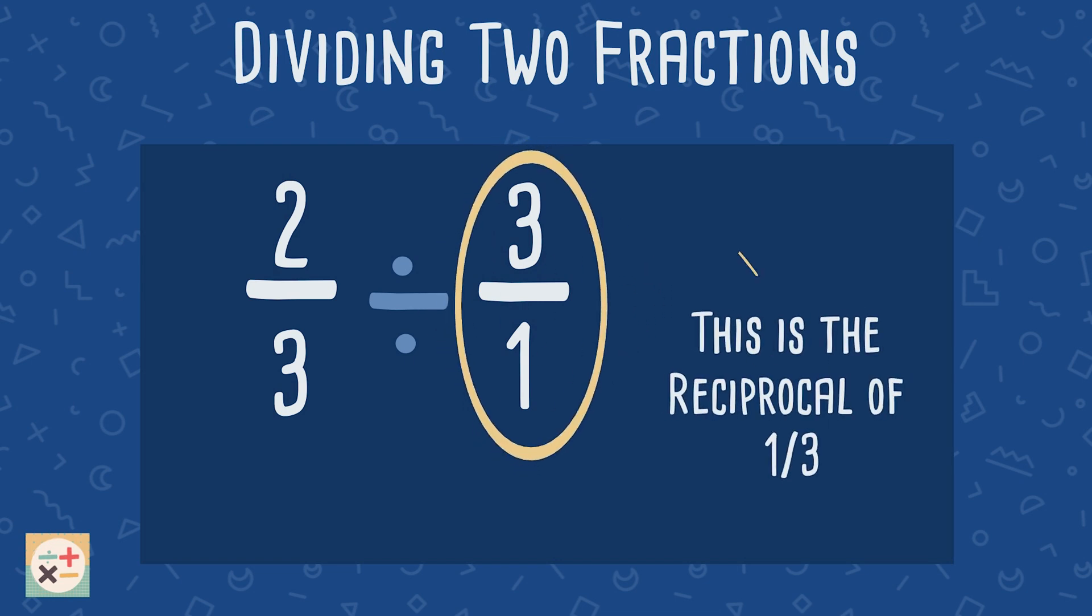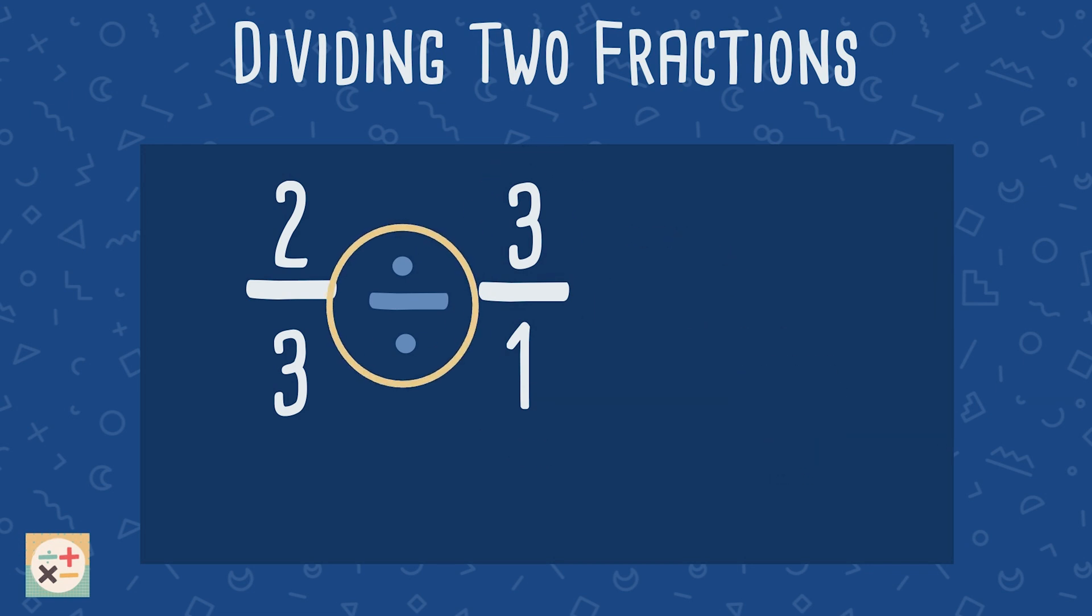This is called the reciprocal of the original fraction. Then change the division to a multiplication. Then all you have to do is perform the multiplication as we did in the previous examples.